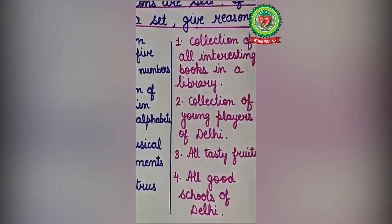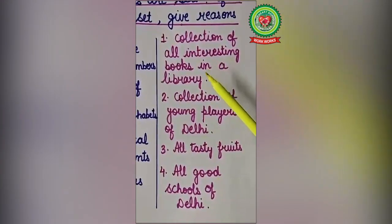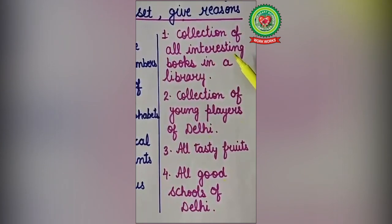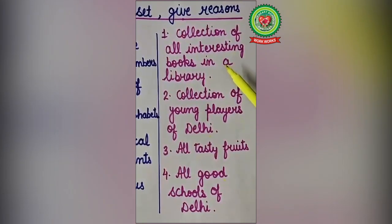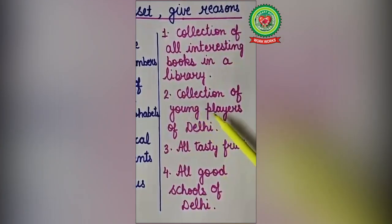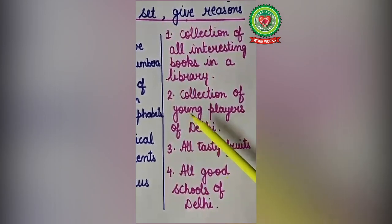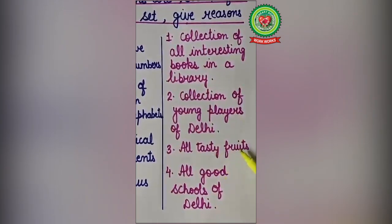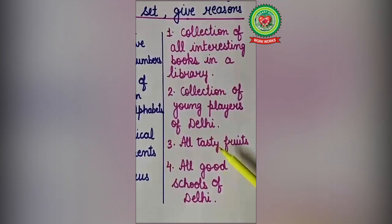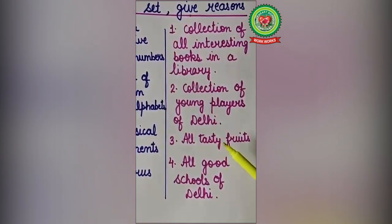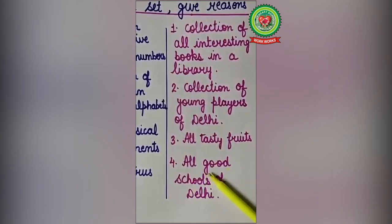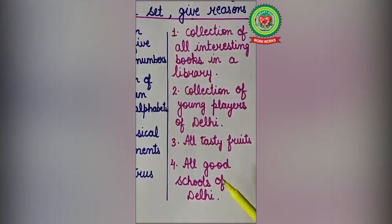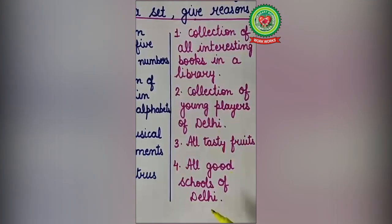On the other hand, collection of all interesting books in a library — 'interesting' is a quality, so the answer may come different, so it is not a set. Collection of young players of Delhi — age is not well defined, so it is not a set. All tasty fruits — 'tasty' is a quality, which is not well defined, so it is not a set. All good schools of Delhi — 'good' depends upon the choice of the people, so it is not a set.